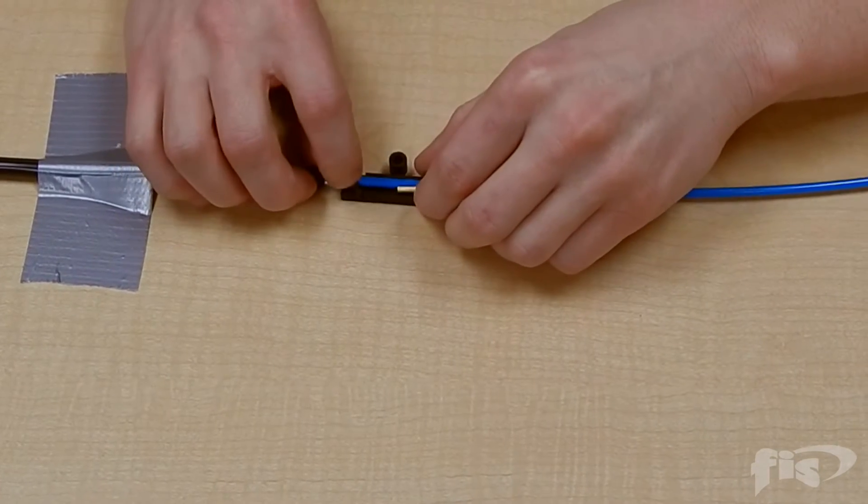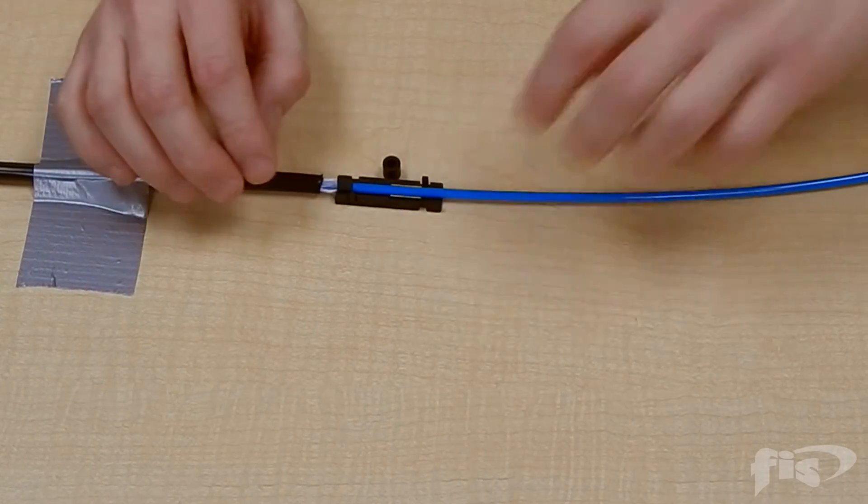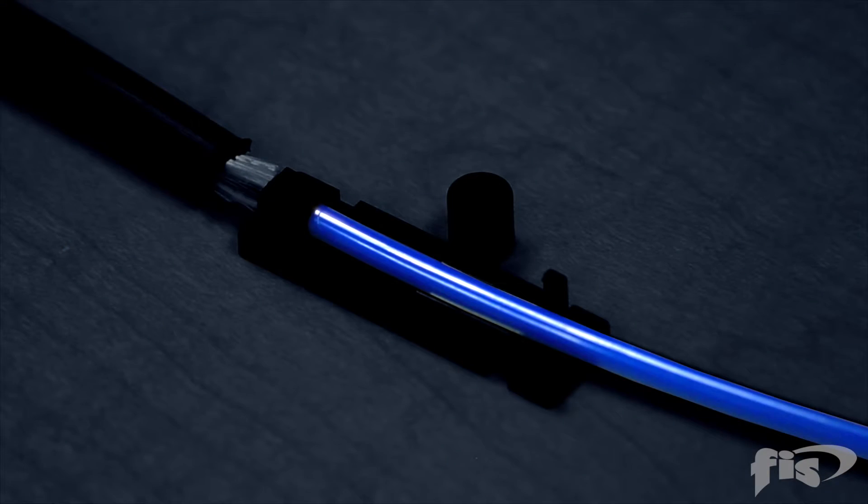After the cable is broken out to the correct length, following the instructions of the fan out kit, cut and remove the buffer tube of the OSP cable.